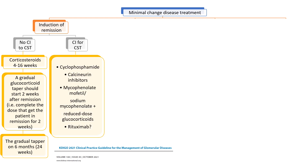If there is any contraindication for corticosteroids, we must use alternatives in minimal change disease. In order, these are cyclophosphamide and calcineurin inhibitors, both of which have evidence for use in minimal change disease. With less evidence: mycophenolate mofetil or sodium mycophenolate with reduced-dose glucocorticoids, and finally rituximab for induction of remission in minimal change disease.